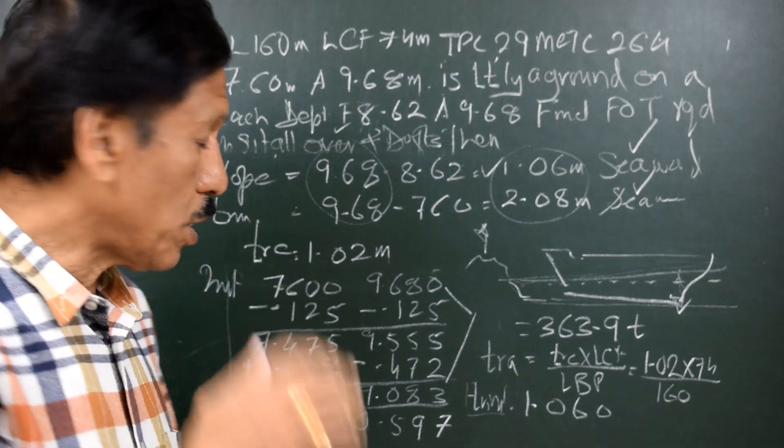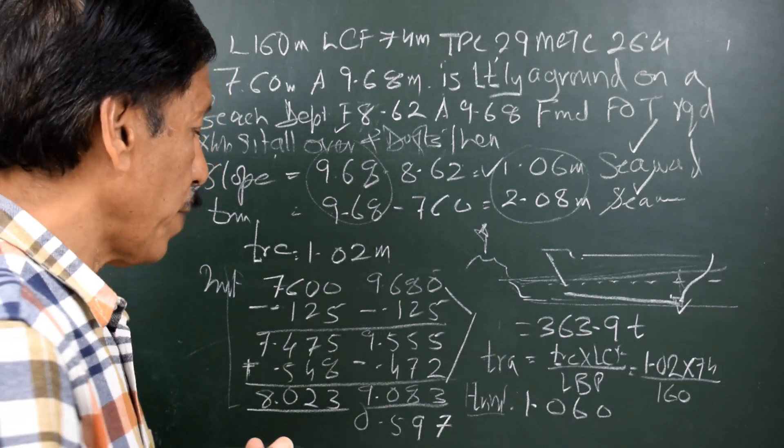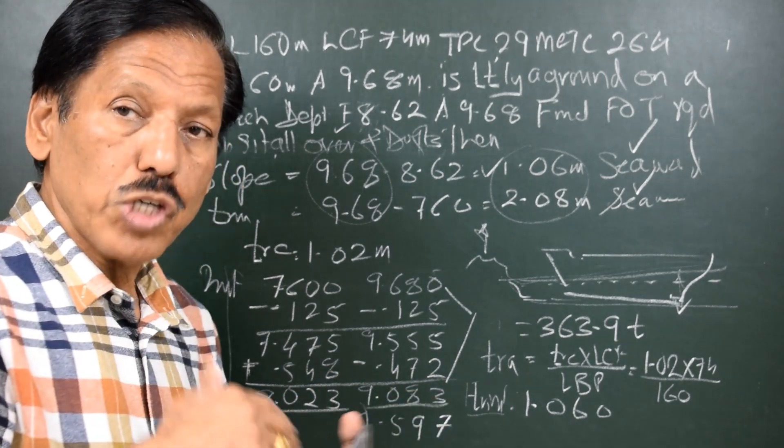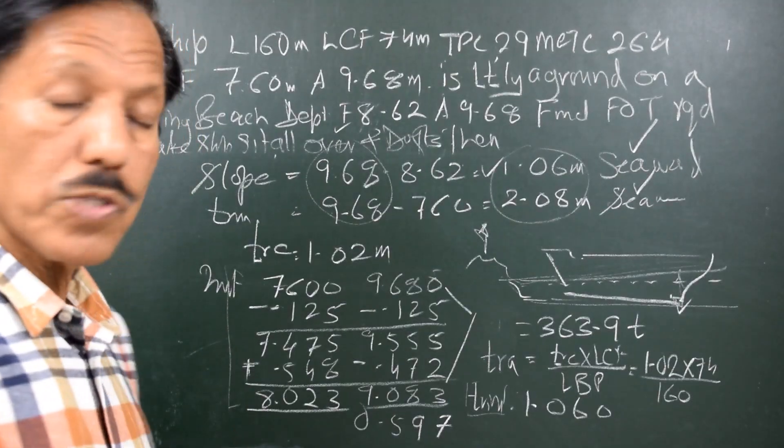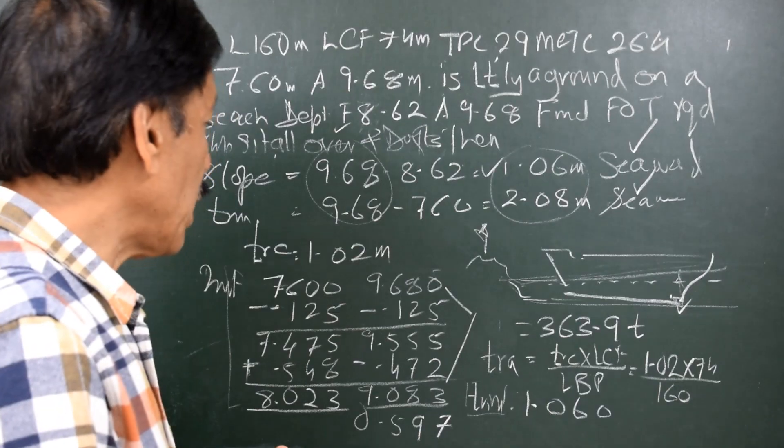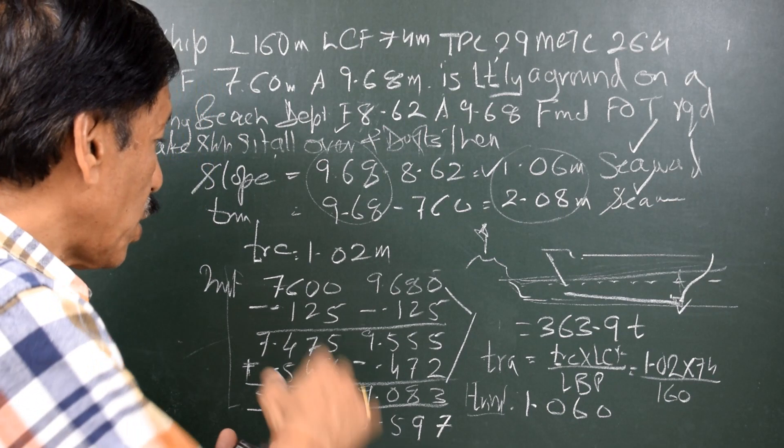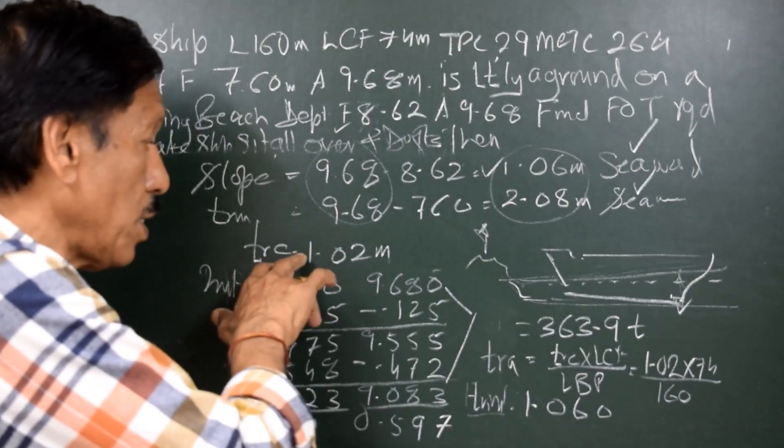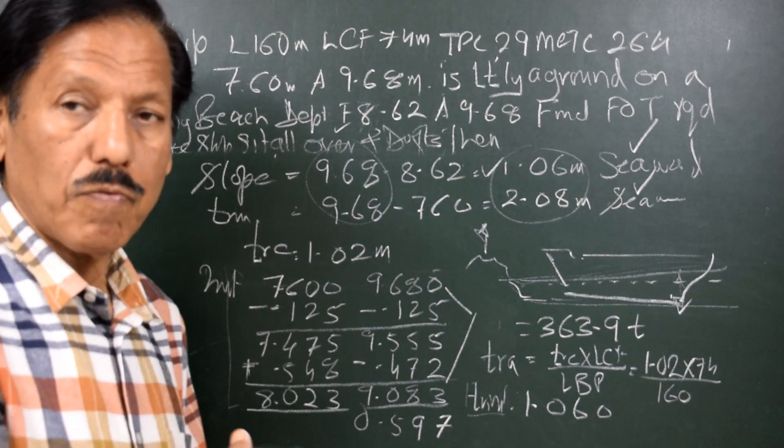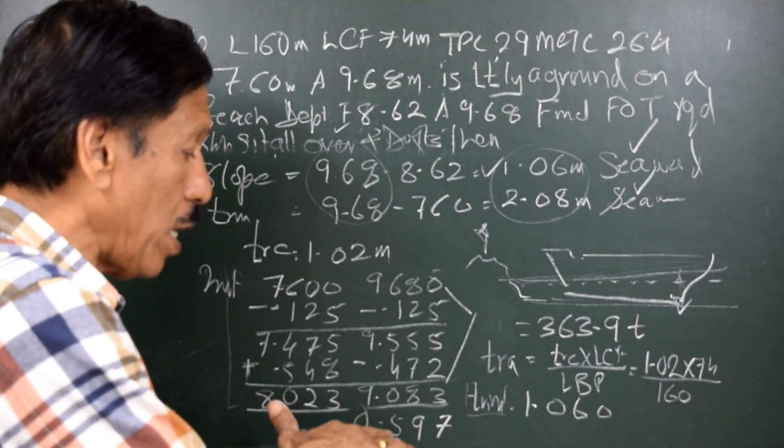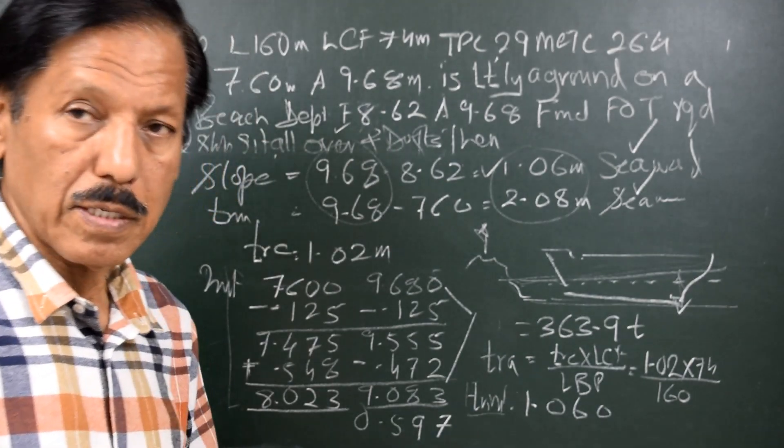So, if the tide falls by this amount that is 0.597 meters, the ship is going to sit all over. Mind you, the point to be noted here is the fall of tide is only 0.597 but the change of trim is much more. Change of trim is 1.02 meters. Or, let us put it this way: there is a trim change required for the ship to sit all over of 1.02 meters, but a fall of tide of 0.597 is sufficient for this.